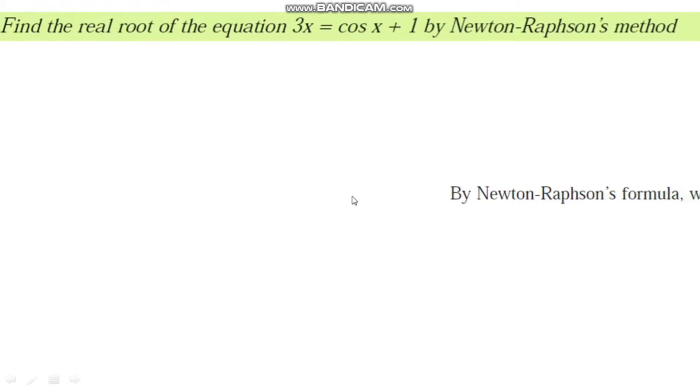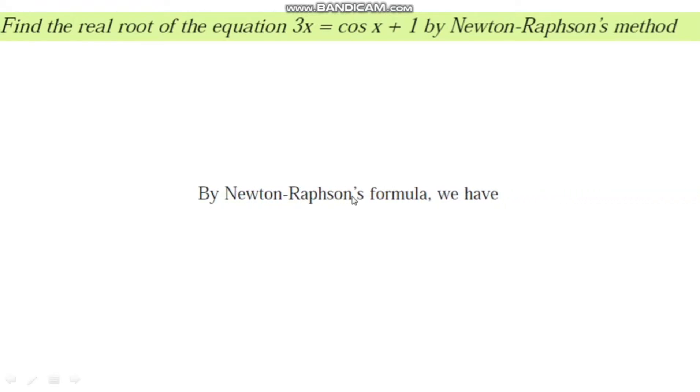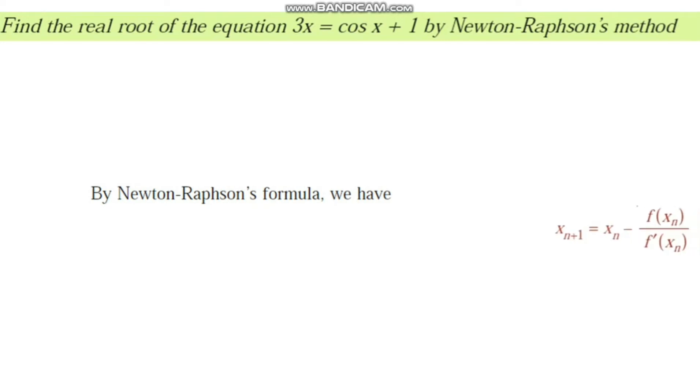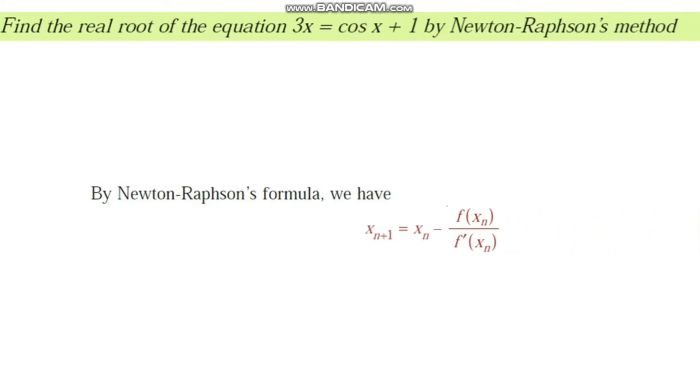Find the real root of the equation 3x equals cosine x plus 1 by using the Newton-Raphson method. We know the Newton-Raphson formula: x_{n+1} = x_n minus f(x_n) divided by f'(x_n).